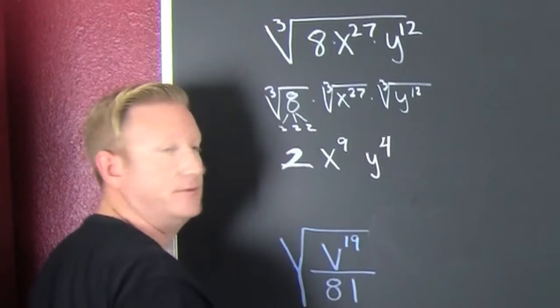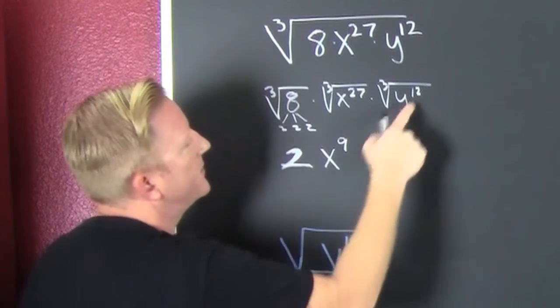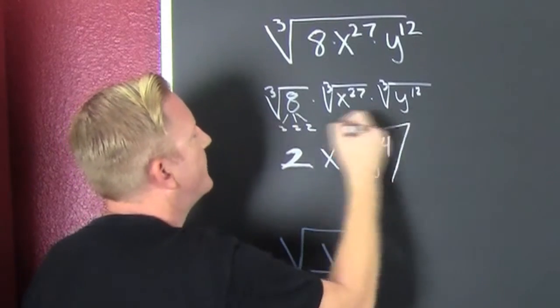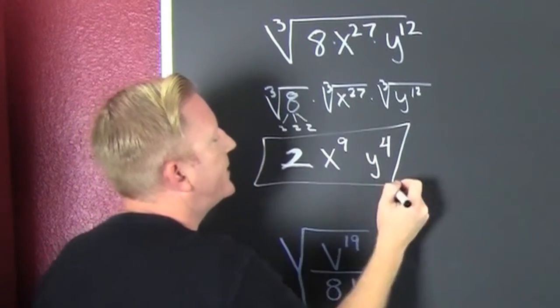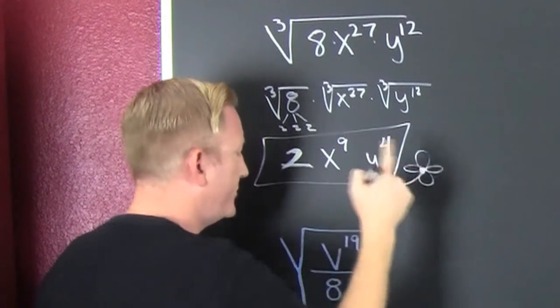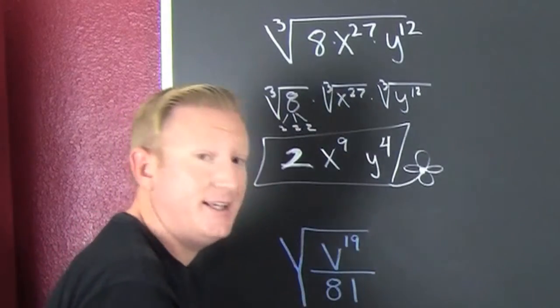And then: 12 divided by 3 is 4, with no remainder. Nothing left in the root.